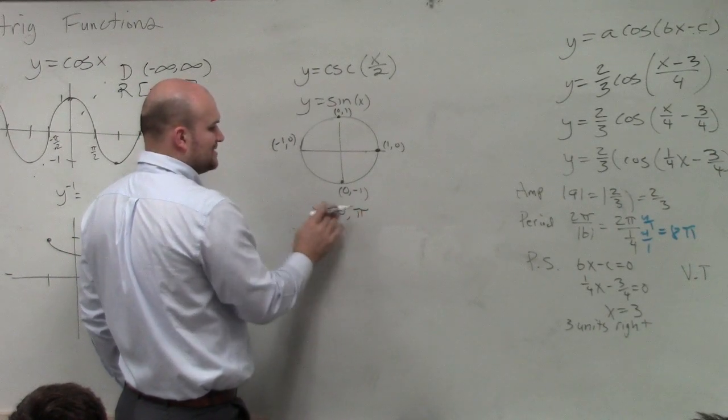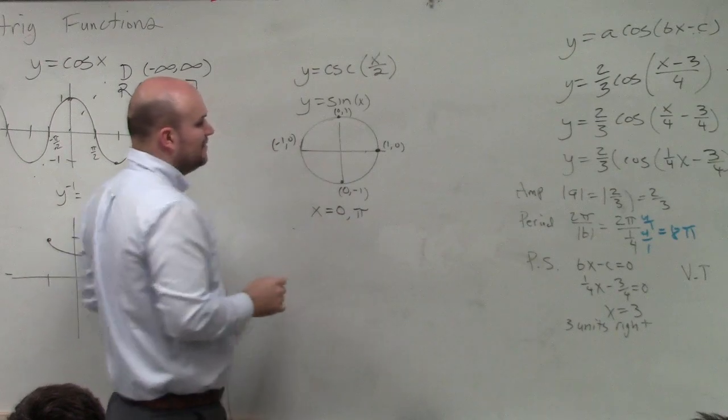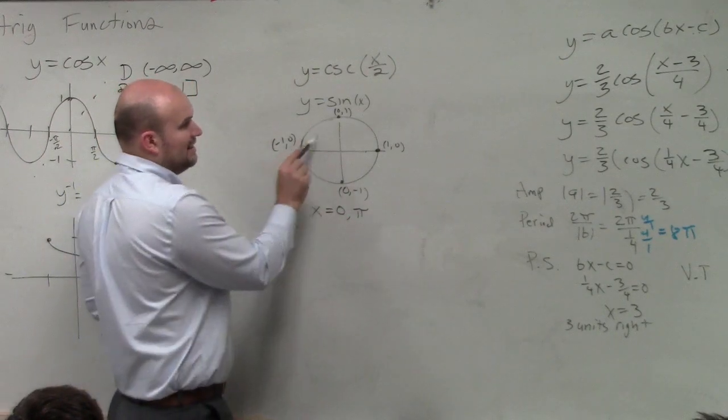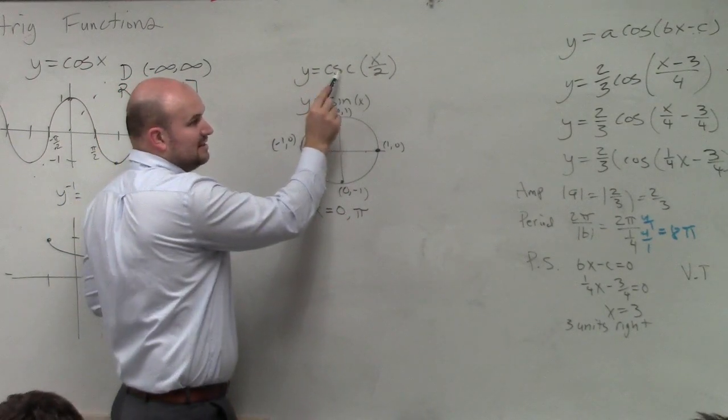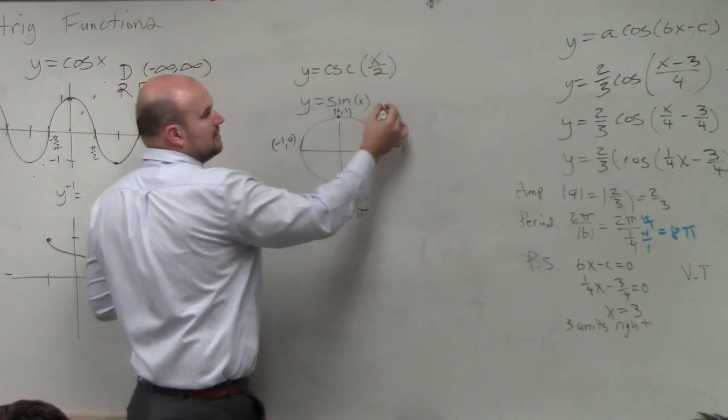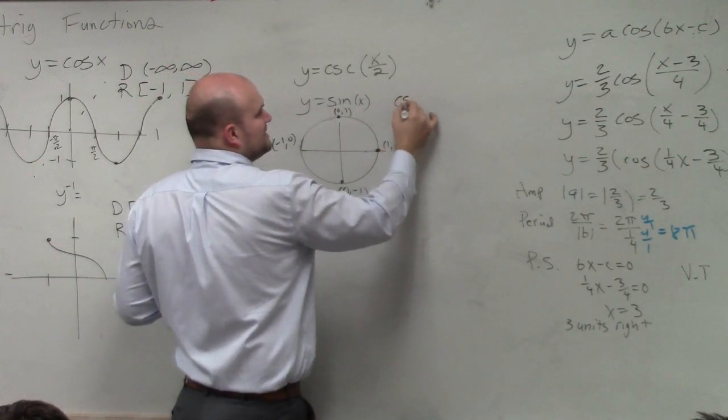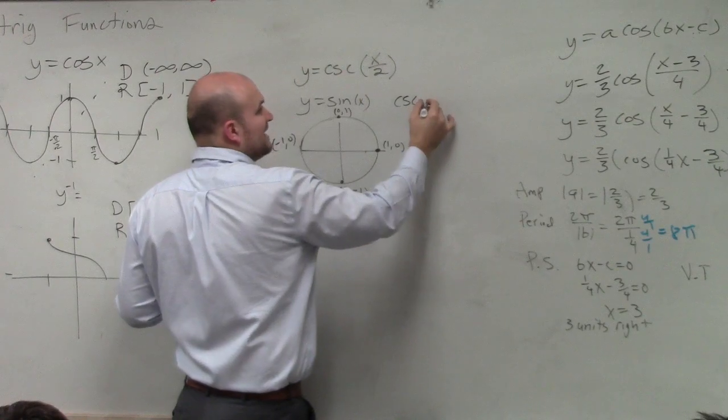I'm sorry. x equals 0 and pi. These are the values when my sine is 0, so therefore, my cosecant is undefined.